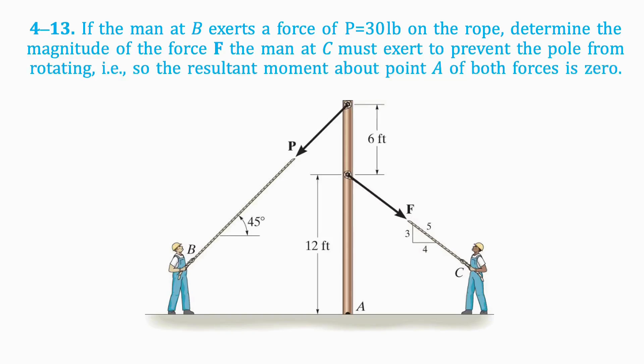Welcome back to Quick Statics Answers. Today's question is, if the man at B exerts a force of 30 pounds on the rope, determine the magnitude of the force the man at C must exert to prevent the pole from rotating.